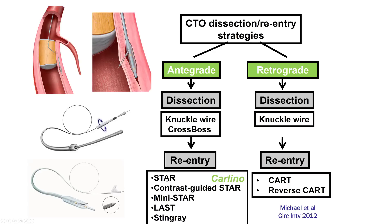The STAR was the original technique in which a guide wire was advanced in a knuckled format until it spontaneously reentered the distal true lumen. A variation was the contrast-guided STAR or the Carlino technique, now evolved into a technique injecting a very small amount of contrast. The mini-STAR and the LAST are wire-based reentry techniques not very commonly done right now. The Stingray is the technique most commonly used for reentering into the distal true lumen.